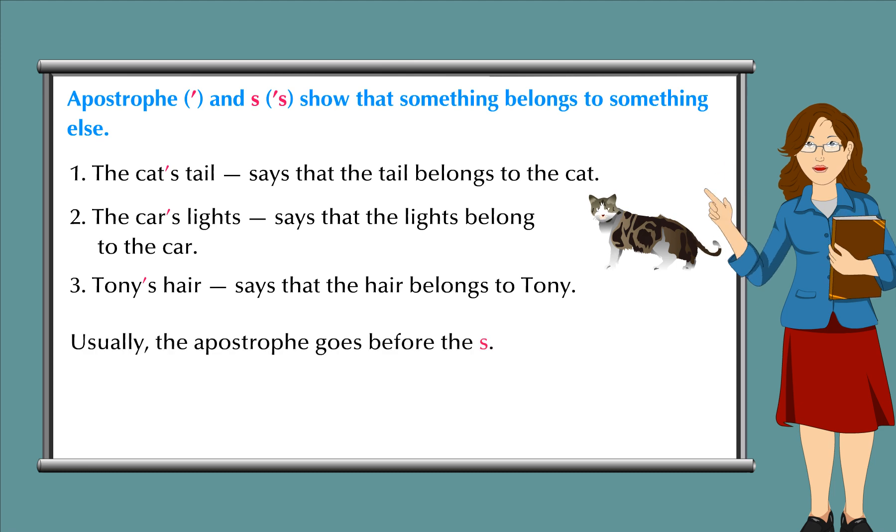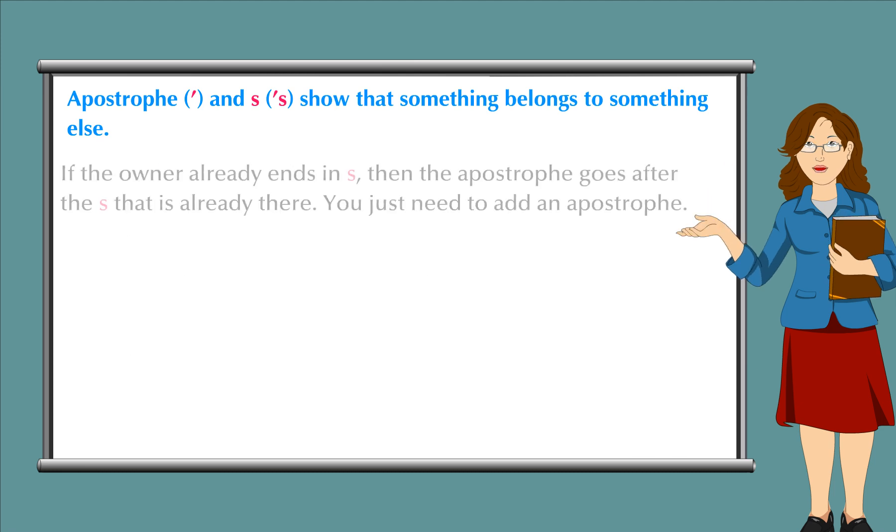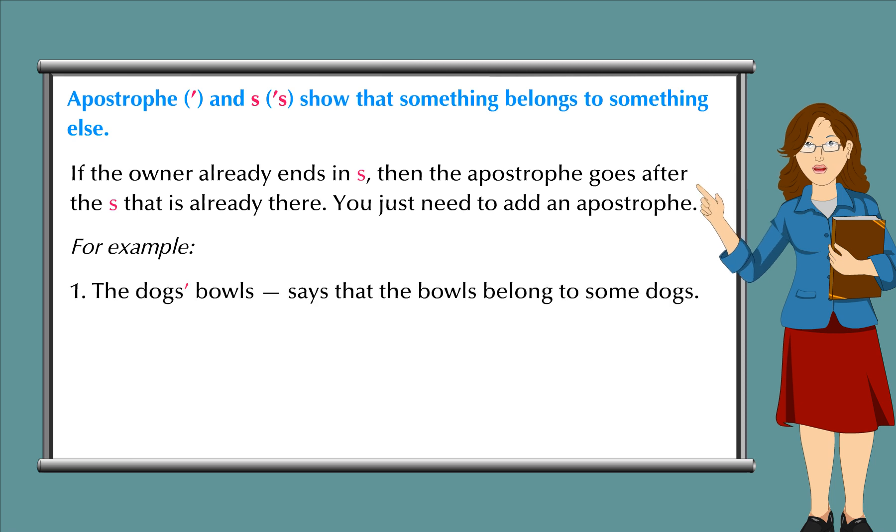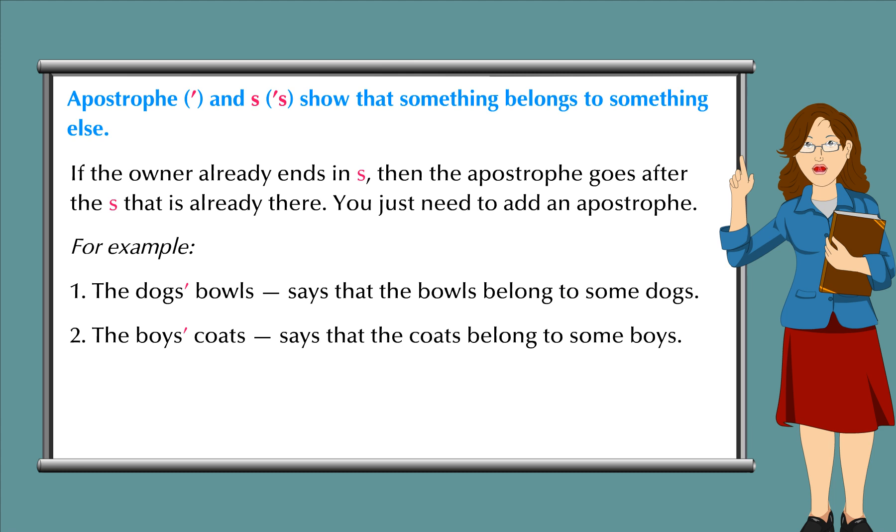Usually, the apostrophe goes before the 's'. If the owner already ends in 's', then the apostrophe goes after the 's' that is already there. You just need to add an apostrophe. For example: 1. The dogs' bowls says that the bowls belong to some dogs. 2. The boys' coats says that the coats belong to some boys.